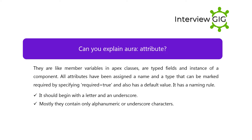Can you explain the Aura attribute? Aura attributes are like member variables in Apex classes — they are typed fields and instances of a component. All attributes are assigned a name and a type that can be marked required by specifying required equals true, and also have a default value. Attributes have a naming rule: they should begin with a letter or underscore, and mostly contain only alphanumeric or underscore characters.